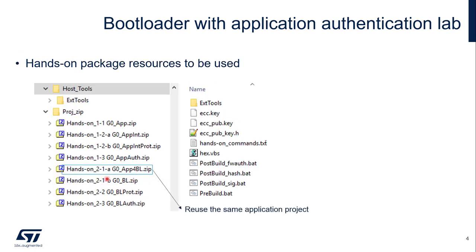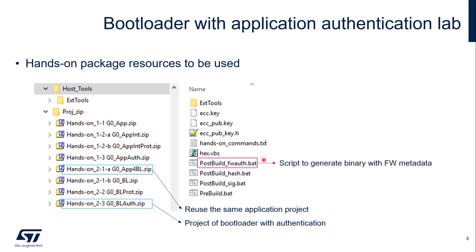We will keep using the same application project with no change — you can keep using whatever you have previously. For the bootloader project, we will use the G0BL_auth.zip file. You can get the project file from this one. We will also use the tool from the host2 folder. We will use this script to generate the binary with firmware metadata.